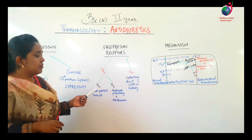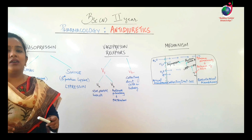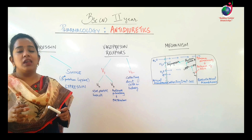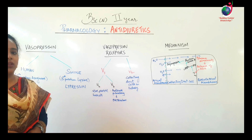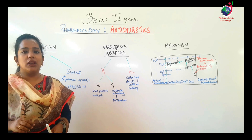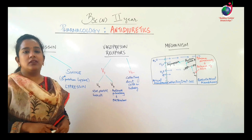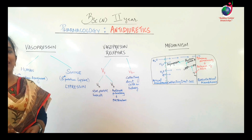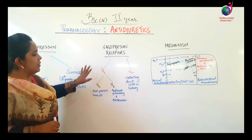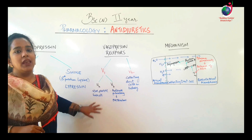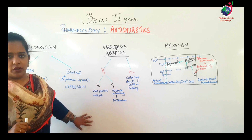V1A receptors also cause increased contractile force — positive inotropic actions. V1B receptors are mainly localized in the anterior pituitary and their function is to increase ACTH release. Importantly, V1 receptors do not have antidiuretic actions in the body.